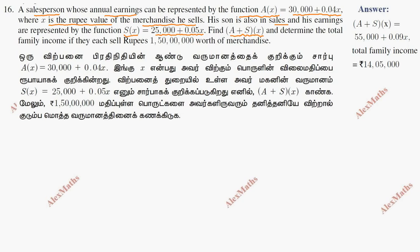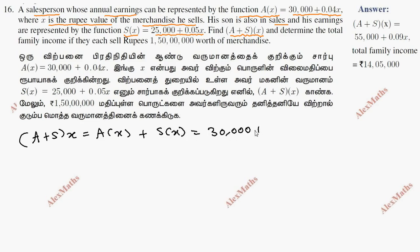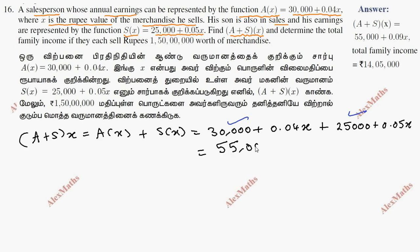Find A plus S of X. The first part is A plus S of X, which equals A of X plus S of X — we add the two functions as they are. So it is 30,000 plus 0.04X plus 25,000 plus 0.05X. Adding the constants and like terms: 55,000 plus 0.09X.